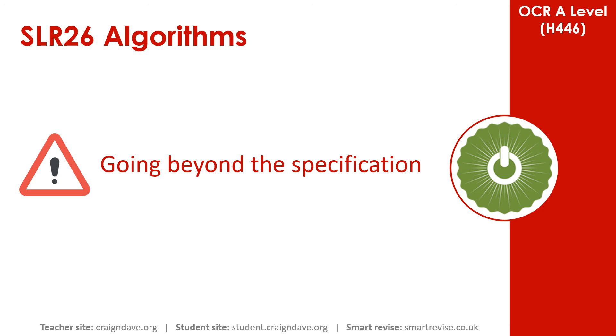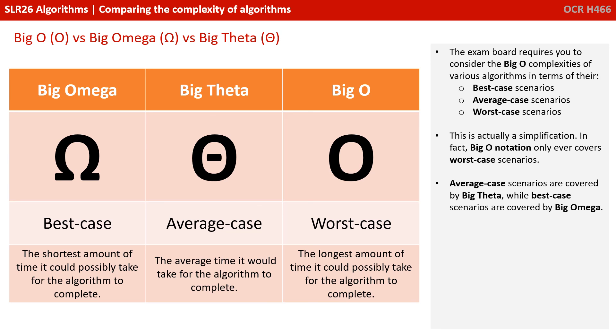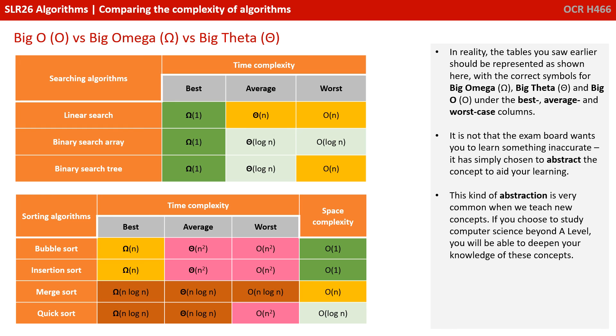That's everything you need to know about big O notation. If you want to stick around for another 30 or 40 seconds, we're just going to touch on something slightly beyond the specification. The exam board require you to consider the big O complexities of various algorithms in terms of the best, average and worst case scenarios. This is actually a simplification. In fact, big O notation only ever describes worst case scenarios. Average case scenarios are covered by big theta, while best case scenarios are covered by big omega, and they have their own separate unique symbols. In reality, the tables you saw earlier should be represented with the correct symbols and terms. It's not that the exam board wants you to learn something inaccurate. It is simply chosen to abstract the concept to aid your learning. And this kind of abstraction is very common when we teach new concepts. If you choose to study computer science beyond A-level, you'll be able to deepen your knowledge of these concepts.